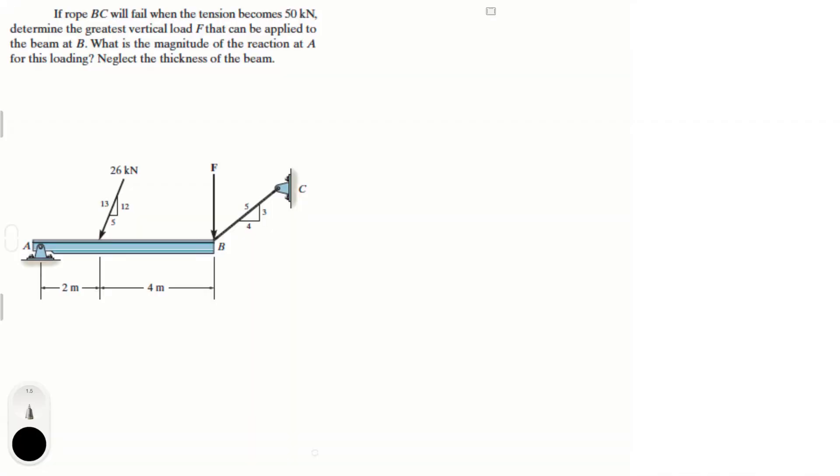Alright guys, let's do this problem that says if rho BC will fail when the tension becomes 50 kN, determine the greatest vertical load F that can be applied to the beam at B. What is the magnitude of the reaction at A with this loading and neglect the thickness of the beam?